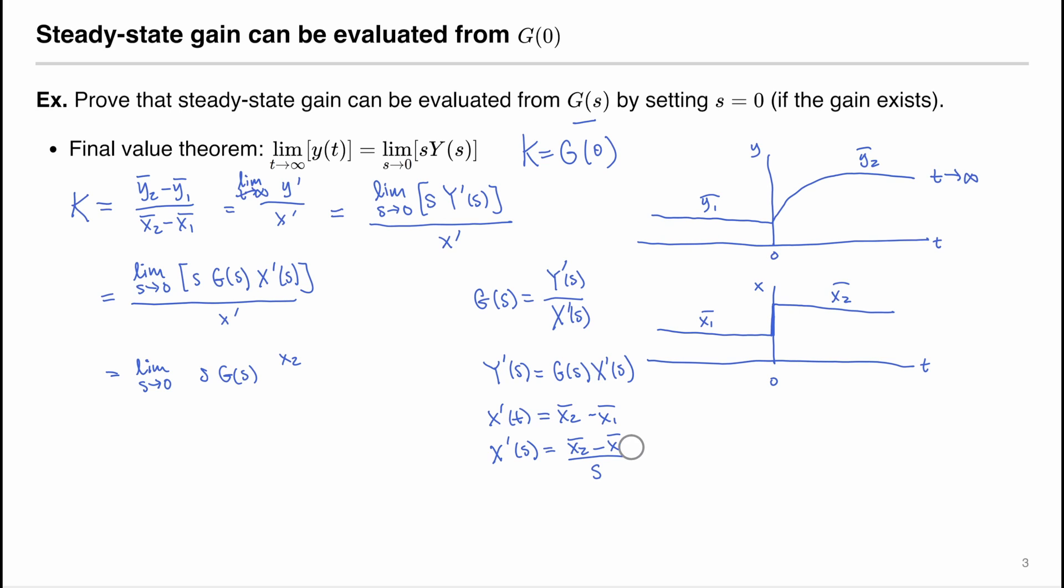u2, typo here, this should be u1. Minus u1 bar divided by s, divided by s. So s can be cancelled out. And u2 minus u1 is the definition of deviation of u. That also cancels out. What we're left with is the limit of s goes to 0, G(s). So that means we have proved that K equals to G(0), if the gain exists.